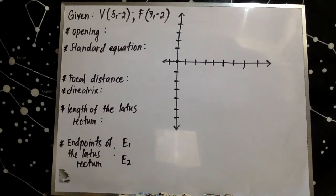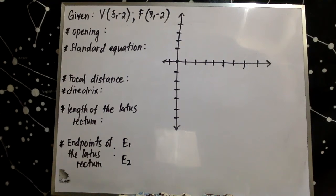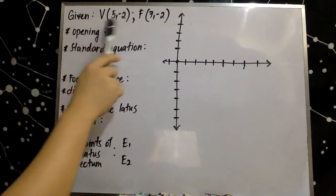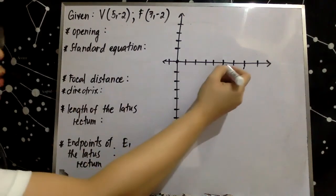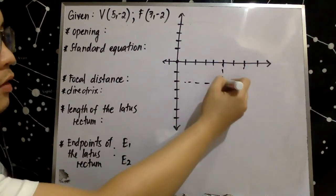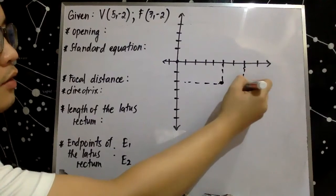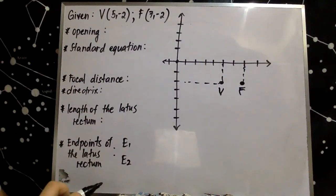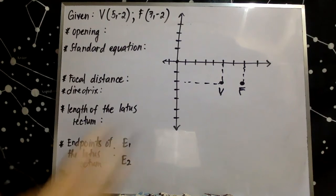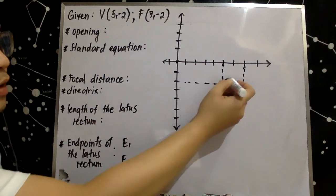Good day everyone. Today I'm going to show you how to determine the parts and properties of a parabola given vertex and focus only. The first thing we need to do is plot or sketch the given parts — the vertex and focus — on our Cartesian plane. Since vertex is located at (5, -2), the vertex is here and our focus is located here. Since we already know that the focus should always be inside the parabola, it implies that our parabola opens to the right.